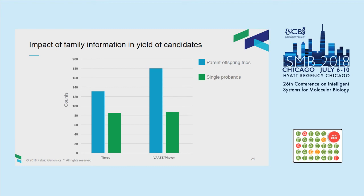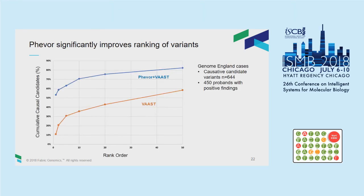In some cases we have family data, and parent-offspring trios significantly improve the ability to identify candidates. Looking at approximately 450 probands with identified candidate variants, about 45% of causative variants appear in the top 20 using VAAST ranking alone. When PHEVOR is added with phenotype information, there is a huge improvement: 75% of cases have the causal variant in the top 20. This means clinicians will find an answer just by looking at the top 20 from 5 million variants — a very good result.